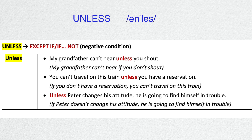The second example: 'You can't travel on this train unless you have a reservation.' This means if you don't have a reservation, you can't travel on this train. The third example: 'Unless Peter changes his attitude, he is going to find himself in trouble.' This means if Peter doesn't change his attitude, he is going to find himself in trouble.